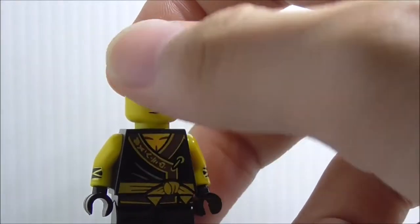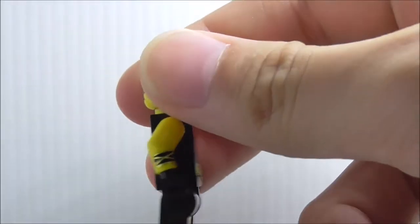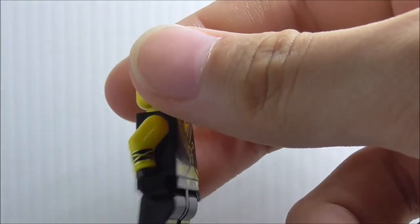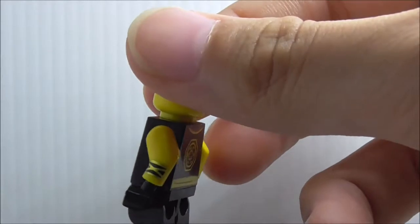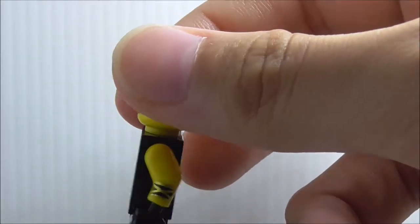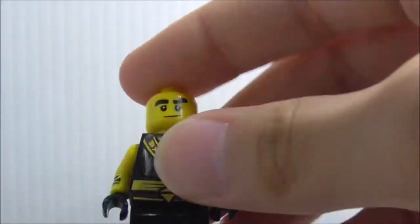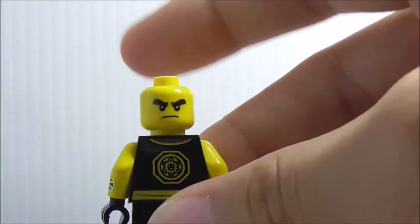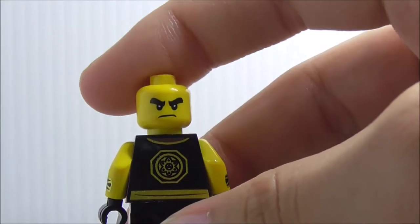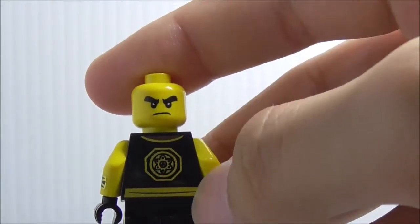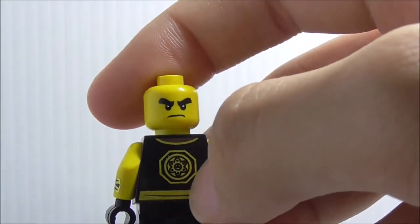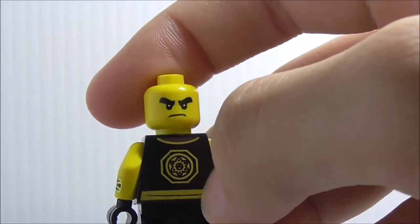This does have side arm printing which is definitely great. He has this wristband type thing, not sure what it is, but does have a bit of leg printing. The back has his alternate expression which is his angry face and has the secret ninja force logo or symbol with the gold lining.